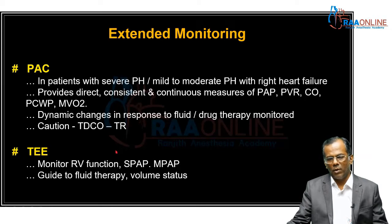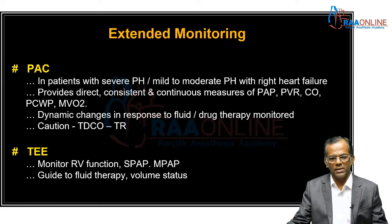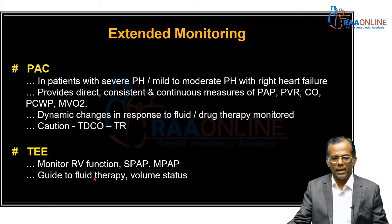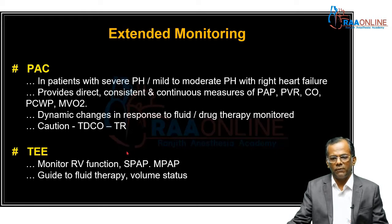My preferred modality of monitoring in pulmonary hypertension would be transoesophageal echocardiography — to monitor RV function, pulmonary artery pressure both systolic and mean. It is also used to guide fluid therapy and assess volume status. The only problem is, if you need to insert a TEE probe, the patient would have to be under general anaesthesia.